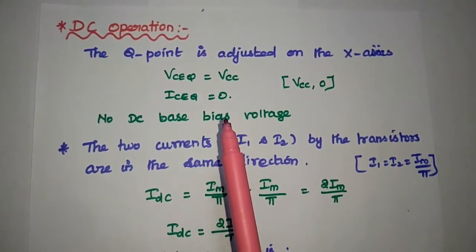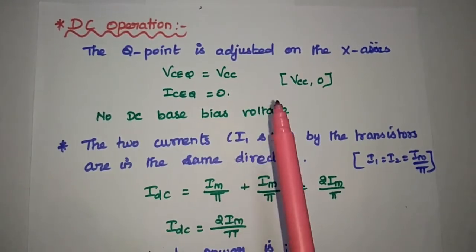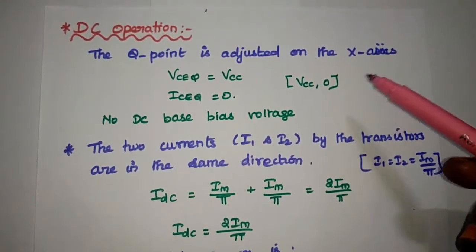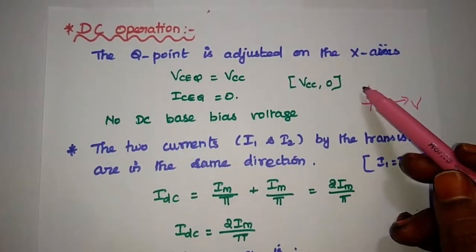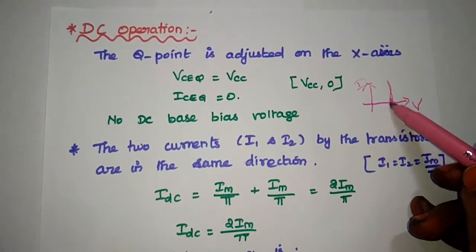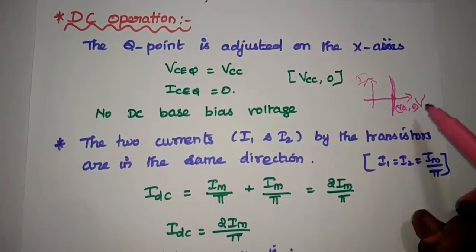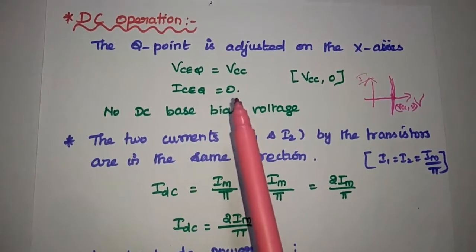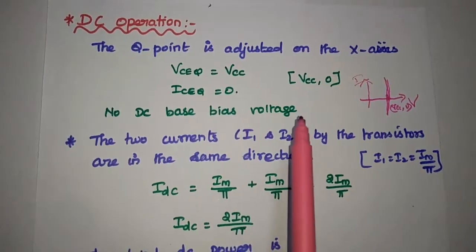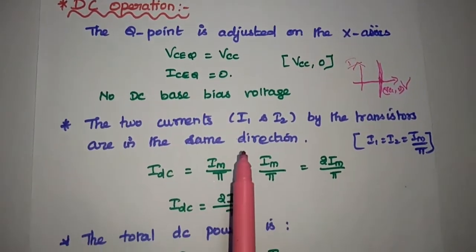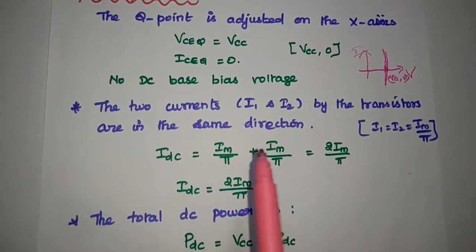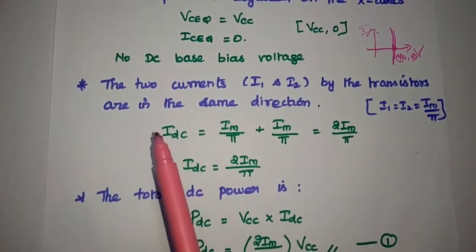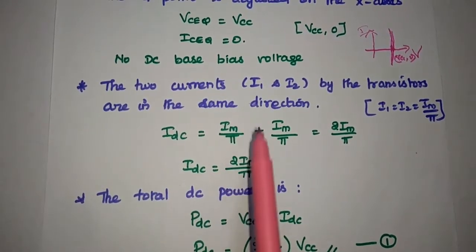Next, we are going to analyze the DC operation and AC operation of this push-pull class B amplifier. For the DC operation, the Q point — that is the operating point — is adjusted on the x-axis. The graph of voltage versus current shows the DC load line with VCC at the point (VCC, 0). The Q point is at VCE equal to VCC and current equal to 0. There is no possibility for a DC base bias voltage in this class B amplifier. The two currents through the transistors are in the same direction, that is I1 as well as I2 for DC operation.